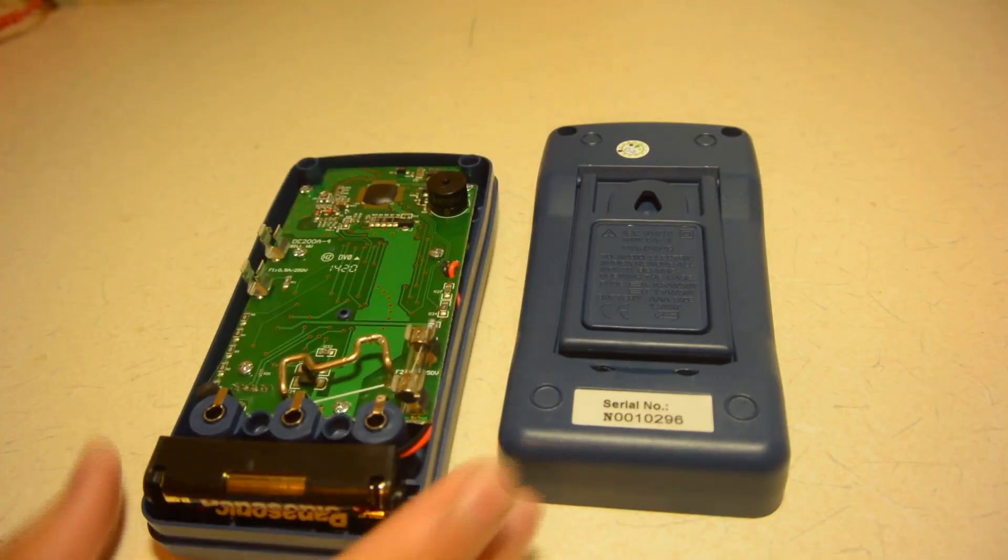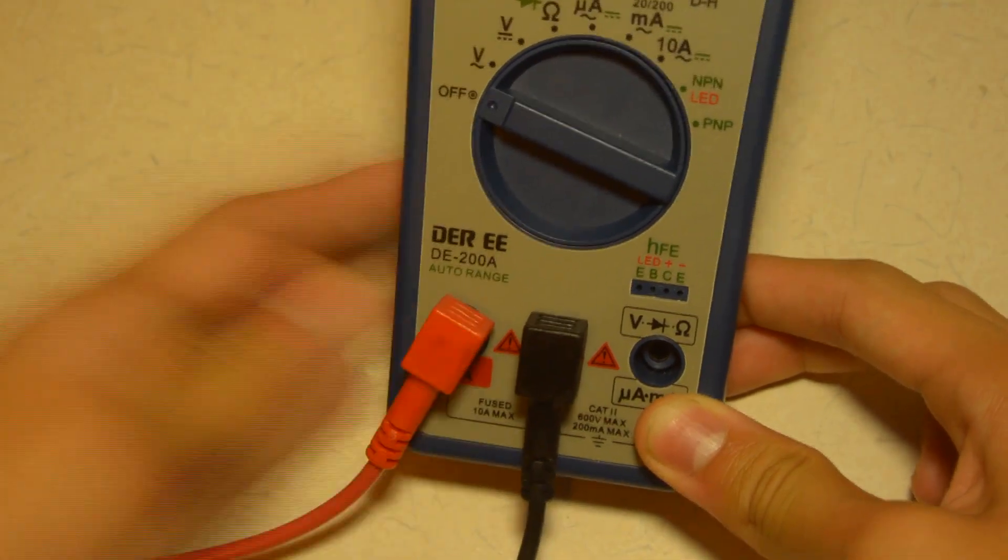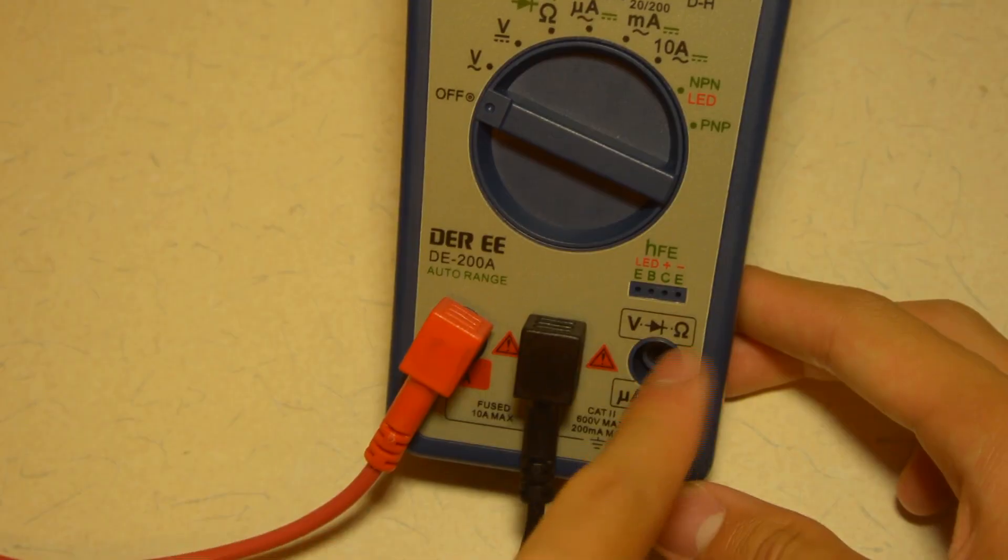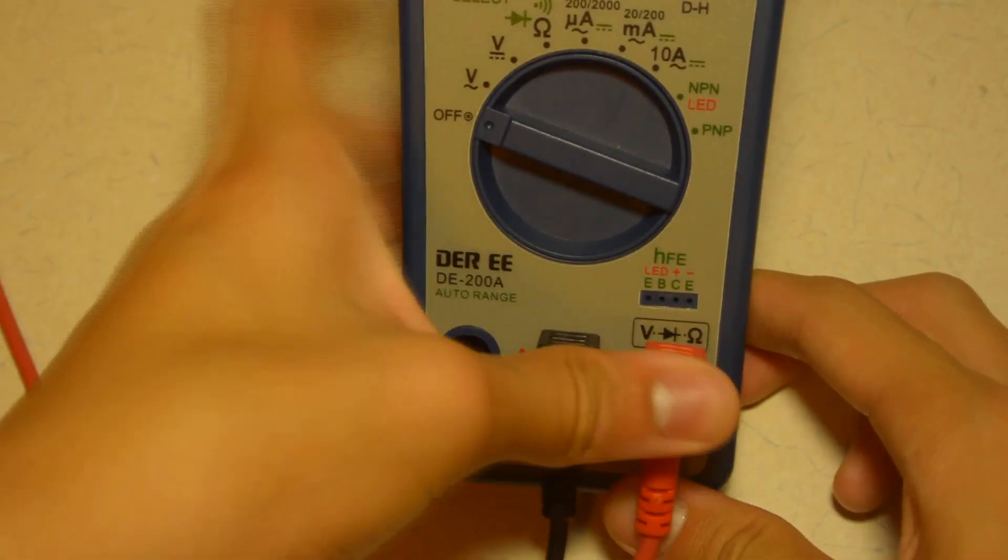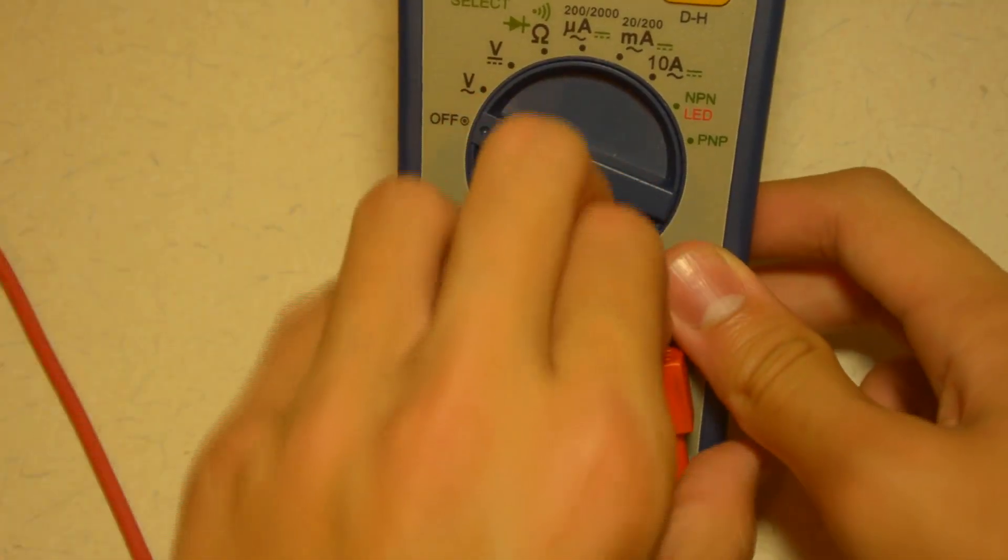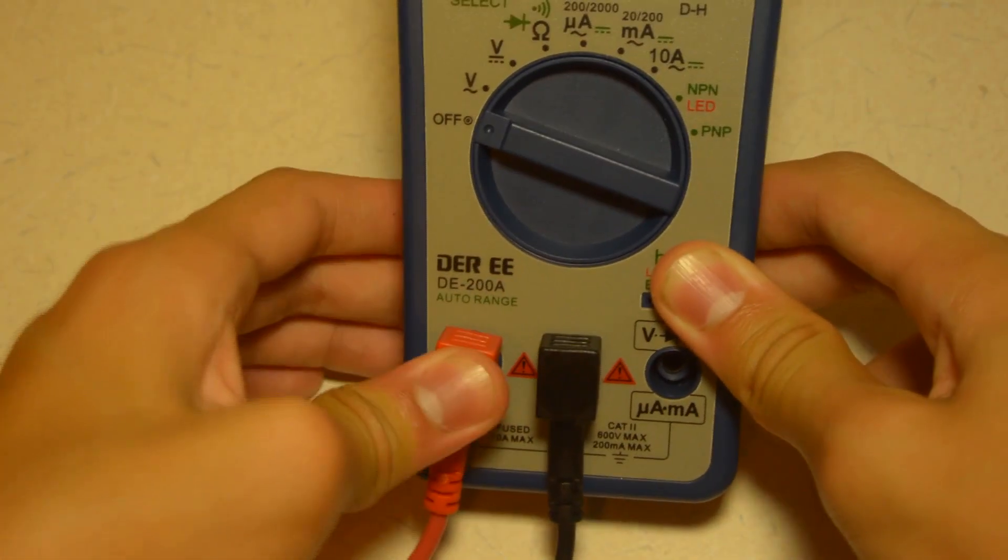If you're measuring current, plug the red lead into the port labeled 10A. If you're only measuring voltage, resistance, etc., plug it into the port labeled V. In this case, we're measuring current, so plug the red lead into the port labeled 10A.